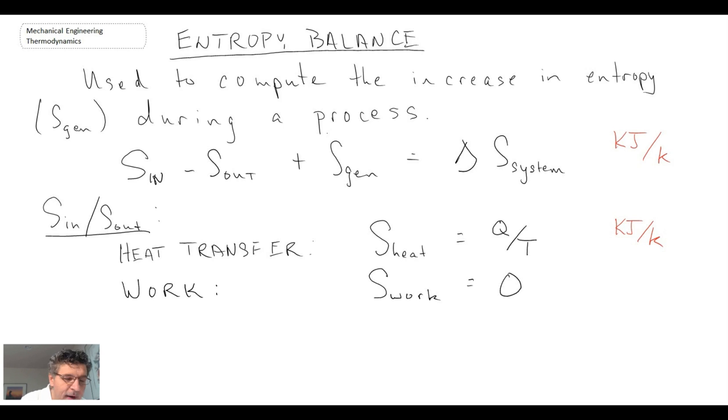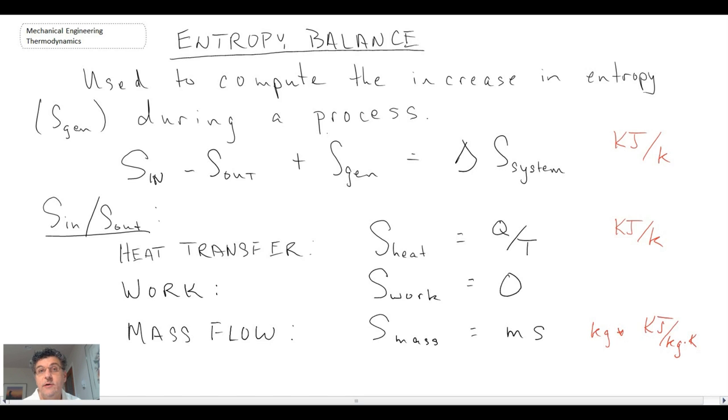And finally, mass flow. When we have mass crossing our system boundary, the mass itself can bring in entropy and can leave with entropy. Consequently, we quantify that by S_mass equals to the mass times the entropy per unit mass. So the units of that particular term would be kilograms for the mass times multiplied by kilojoules per kilogram kelvin, which is our standard units for entropy.